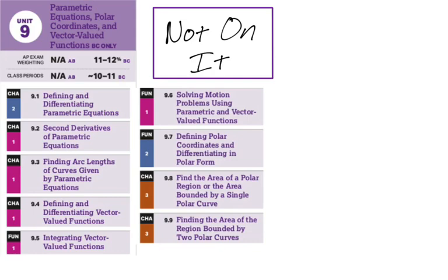So we got parametric equations, polar coordinates, and vector value functions. You can read all those things, but it basically just boils down to parametric, polar, and vector value functions. They're not on it this year. So for some of you, maybe that's good. Some of you, maybe it's not so good.